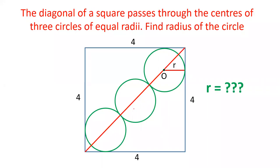Hello friends, welcome to our YouTube channel SSA Selector. In this video I will explain how to find out the radius of a circle. There are three circles of equal radius and the diagonal of the square passes through the center of each circle. The radius of each circle is the same and we have to find the radius if the side of the square is 4 centimeters. Let's see how to solve this question.